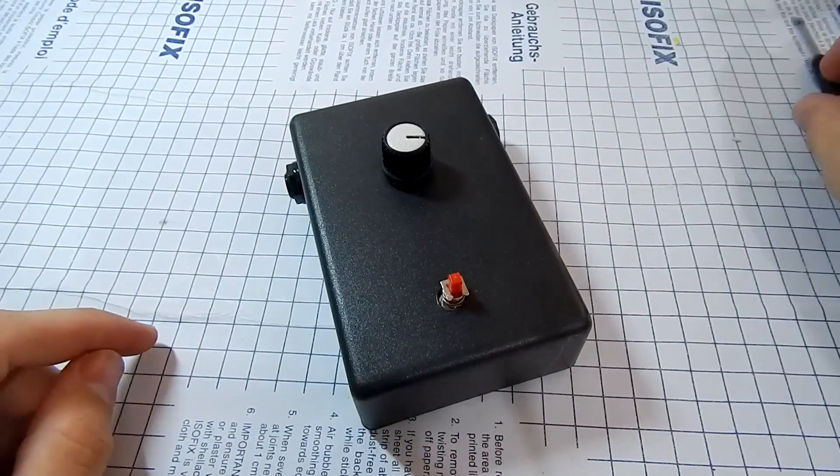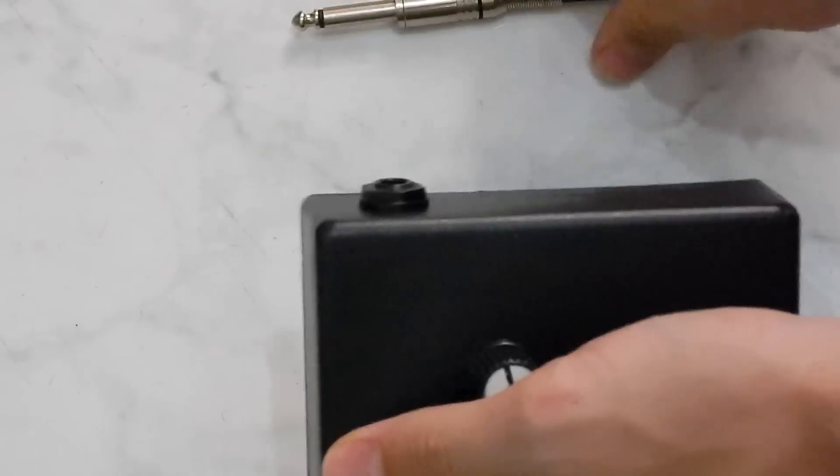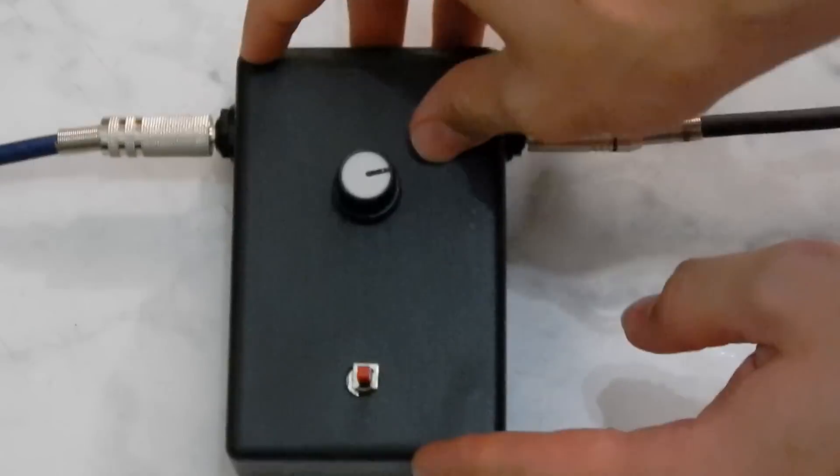Our distortion pedal is ready! Just connect the left side connector (input) to the instrument and the right side (output) to the amplifier or amp.